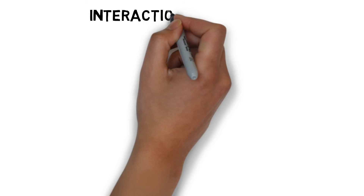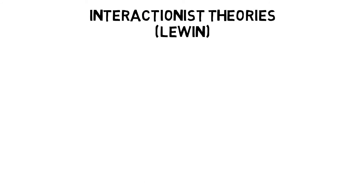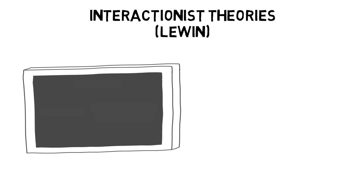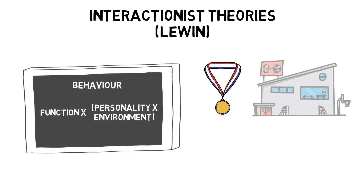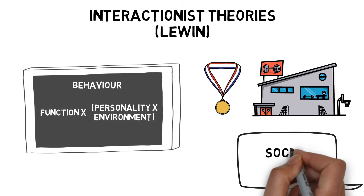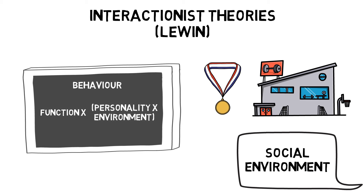Another interactionist theory is by Lewin, who tried to explain personality with a scientific formula. Lewin suggested behaviour equals function times personality times environment. When situational factors are strong, for example an important competition, they are more likely to affect behaviour than personality traits. But when situational factors are weak, such as just a normal training session, then personality is more likely to affect behaviour. Social environment is how the behaviour and expectations of others affect us — for example, arguing with a referee because the rest of the team do it.